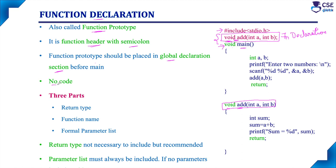This function prototype contains no code. It is simply a one-line statement along with a semicolon. There are three parts in a function declaration: return type, function name, and formal parameter list.